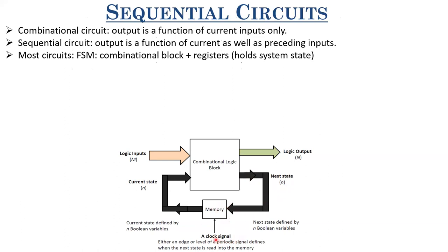The next state is fed into the memory or register. Whenever the next active clock edge comes, this is sampled and reflected at its output. So this is the input of this register and this is the output, whenever an active clock edge comes. Typically, these registers work at clock edge and not at clock levels. In modern circuit design, most registers work on clock edge — specifically at zero-to-one transition, which is called positive edge triggered, or at one-to-zero transition, called negative edge triggered registers.